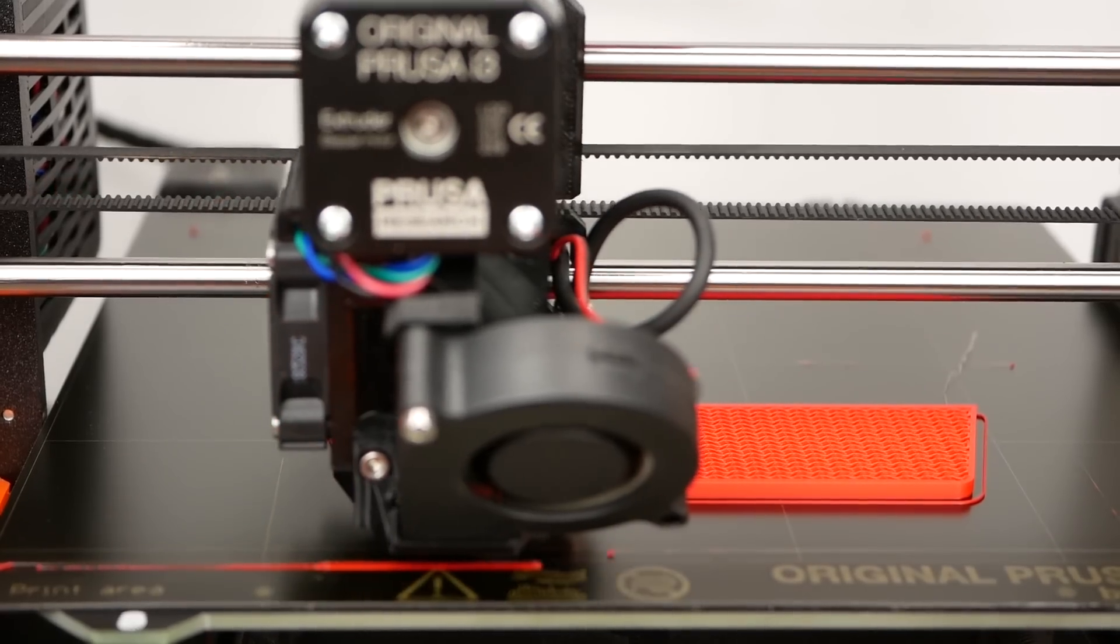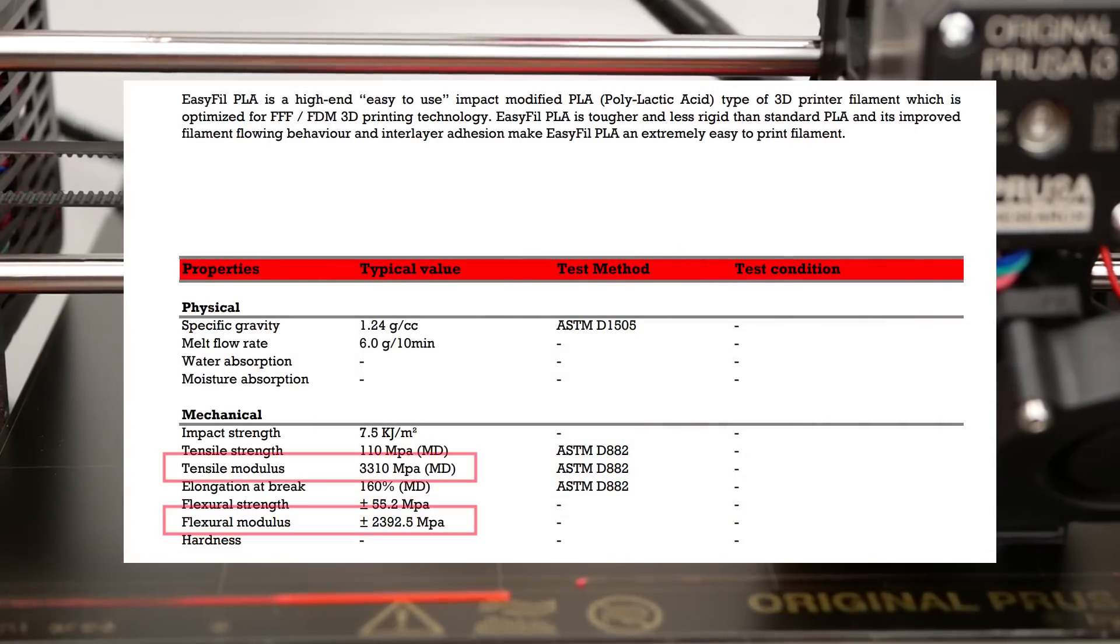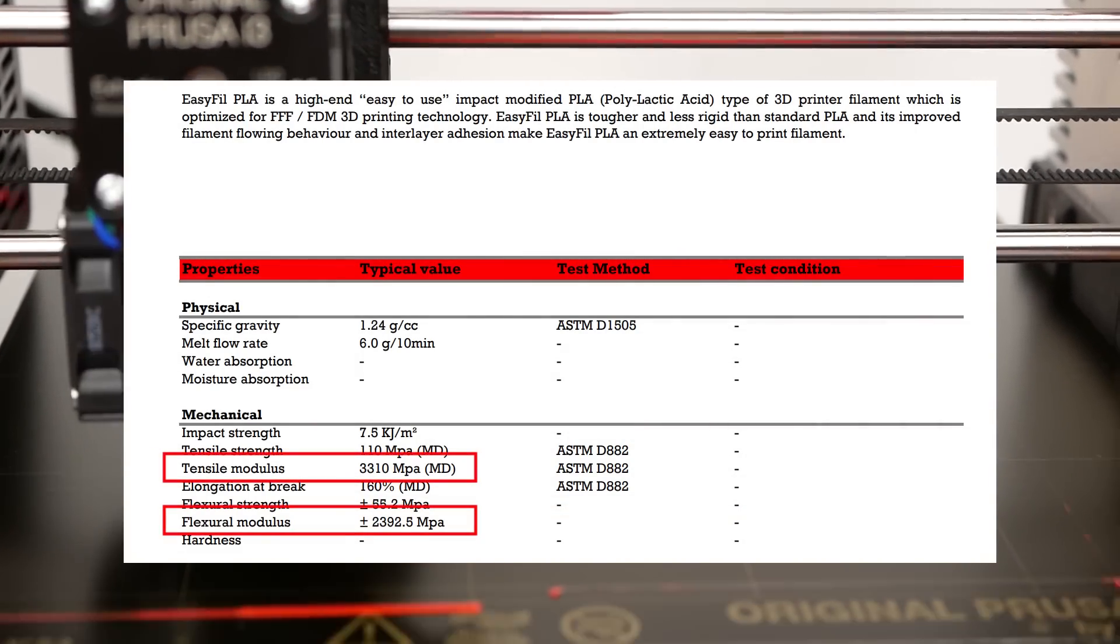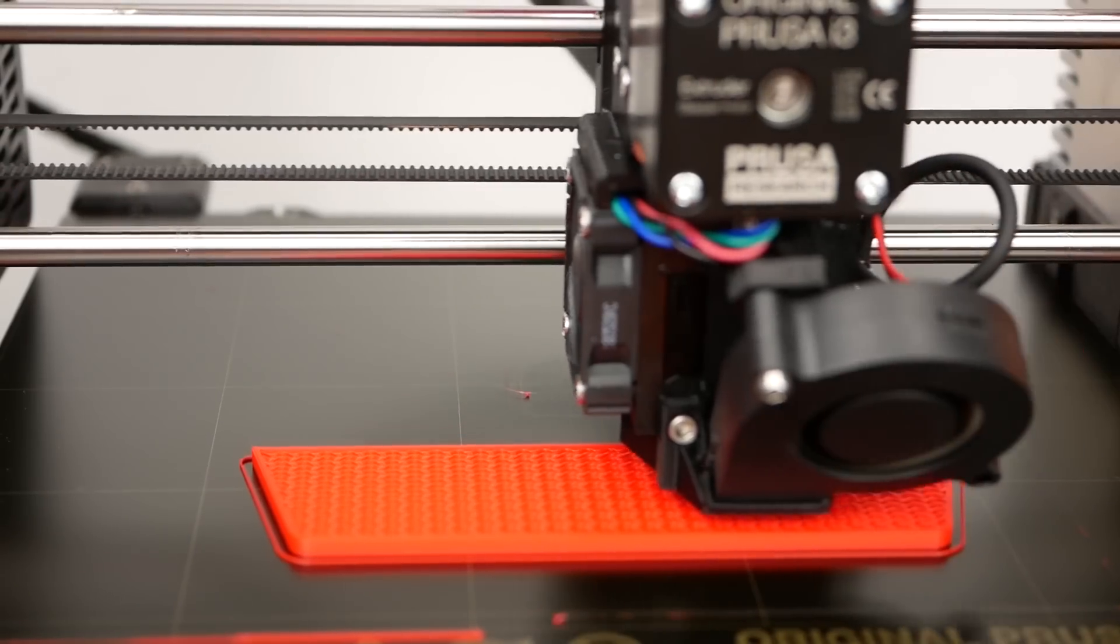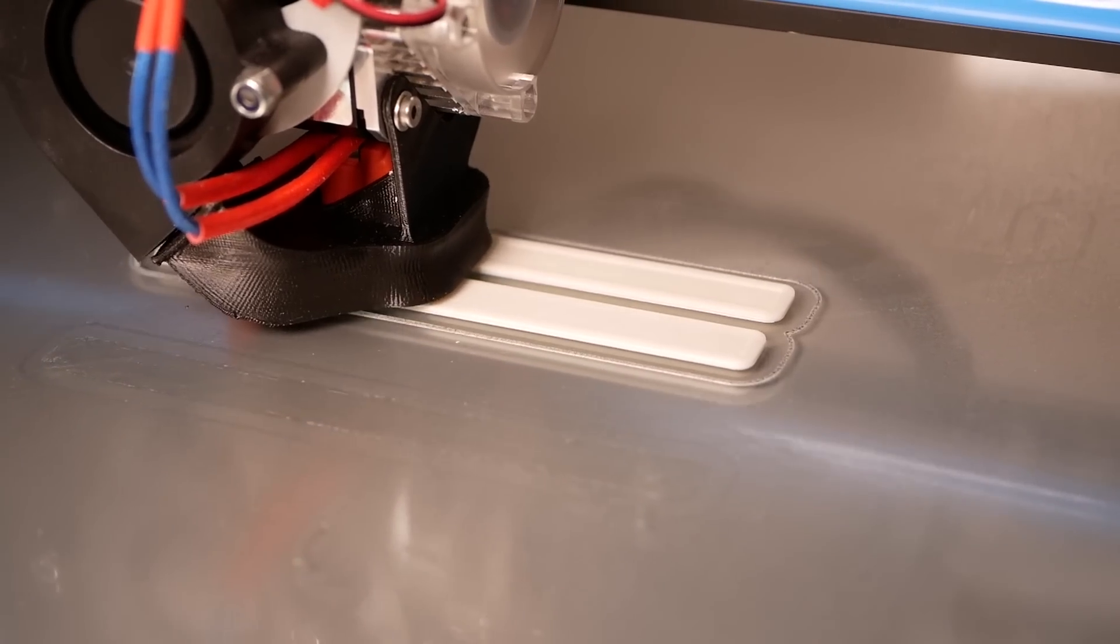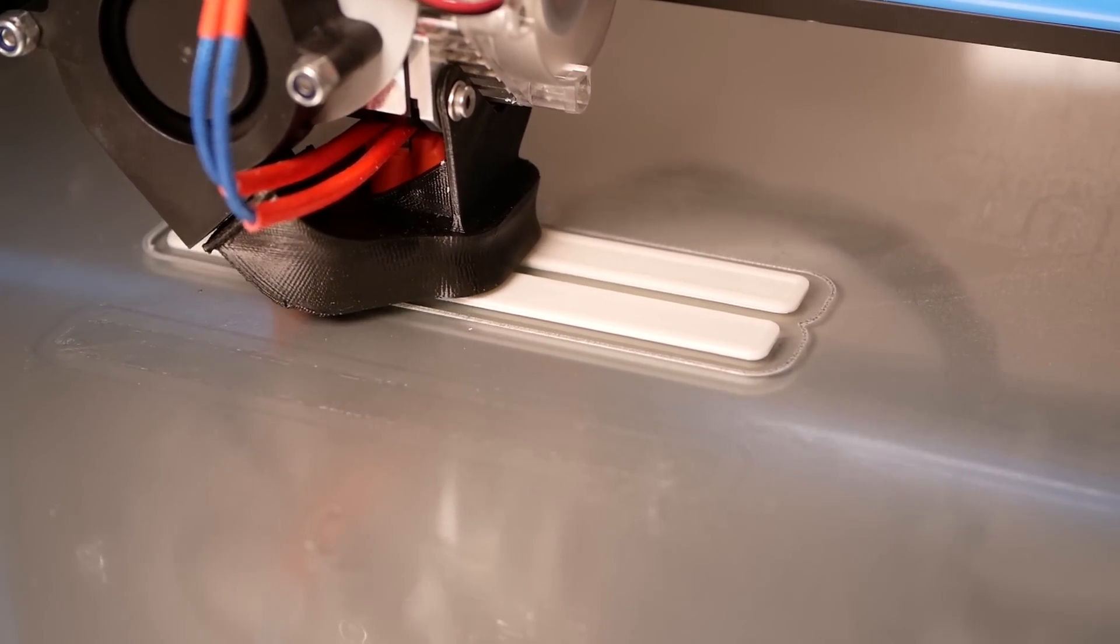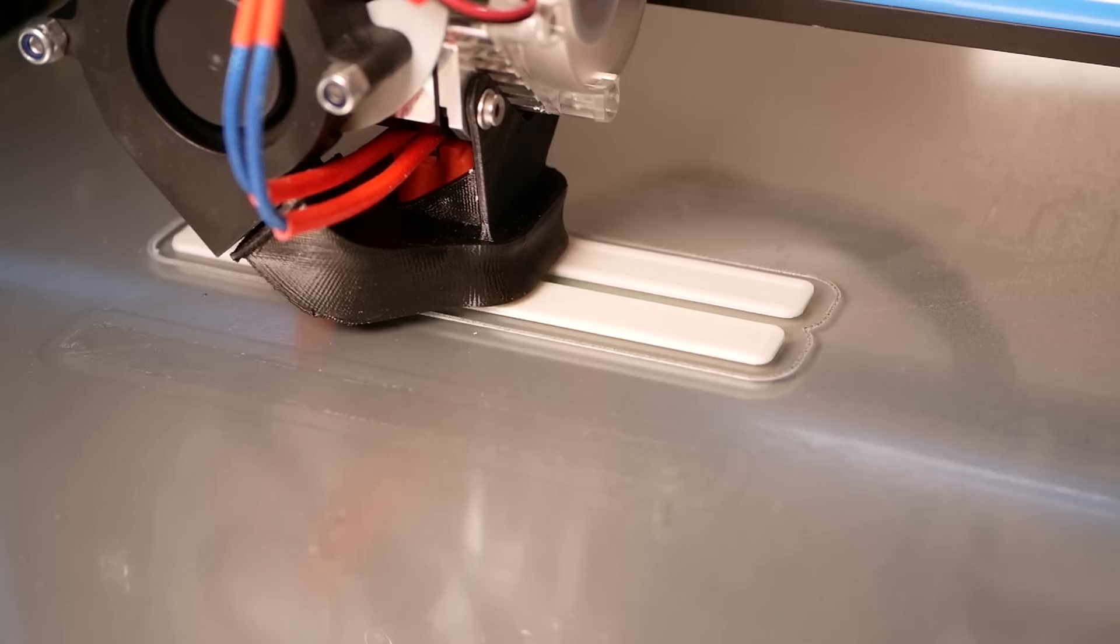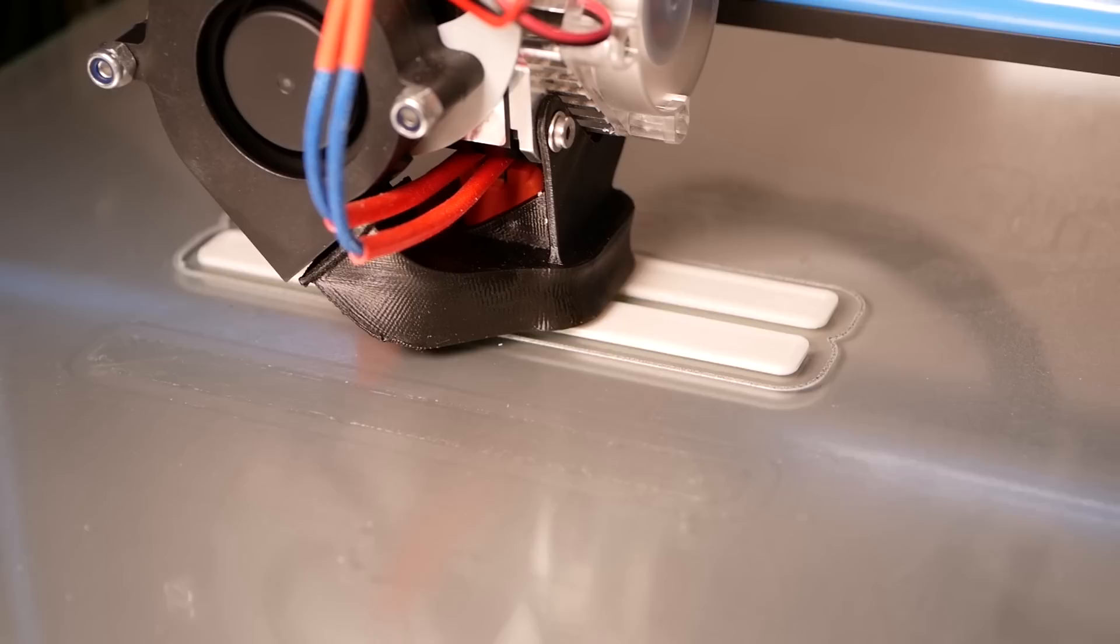Before you start complaining and tell me that we could have simply looked at the Young's modulus in a datasheet, let me tell you that datasheets often are a bit sugarcoated because they sometimes use test values not from 3D printed samples but from injection molded ones. Then there is the point that 3D printed parts have print direction dependent properties, especially if we take a look at fiber reinforced ones.